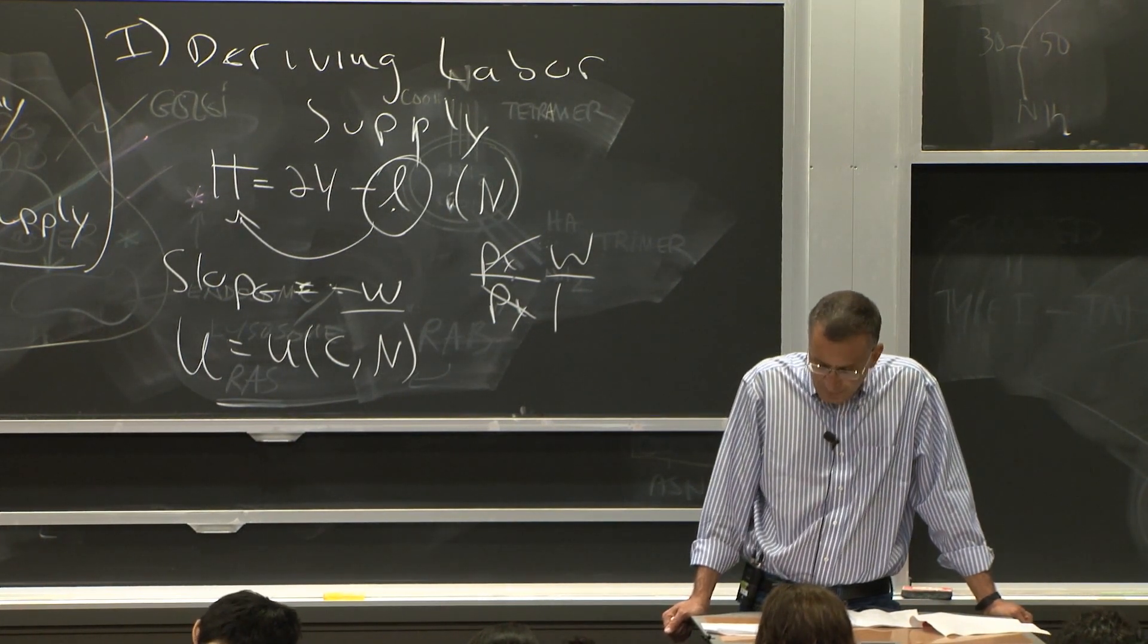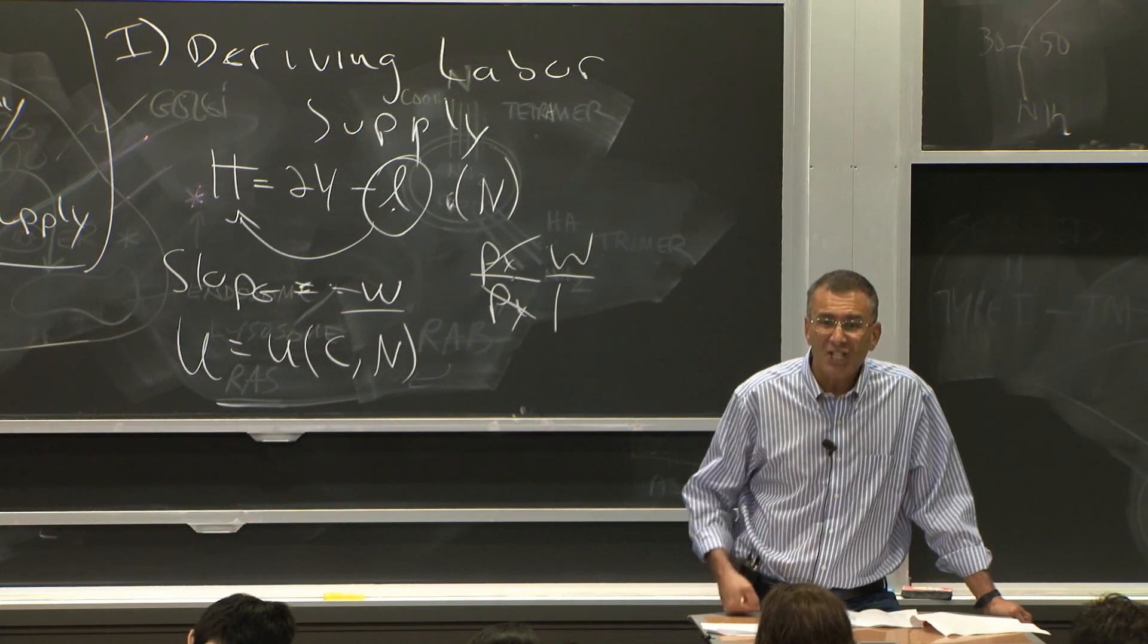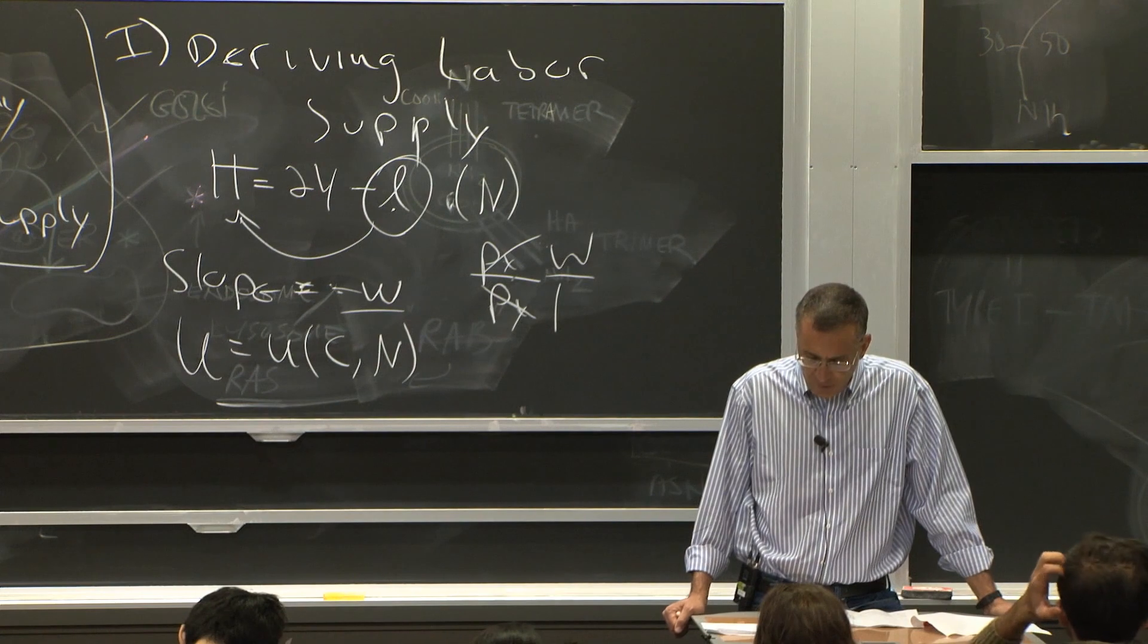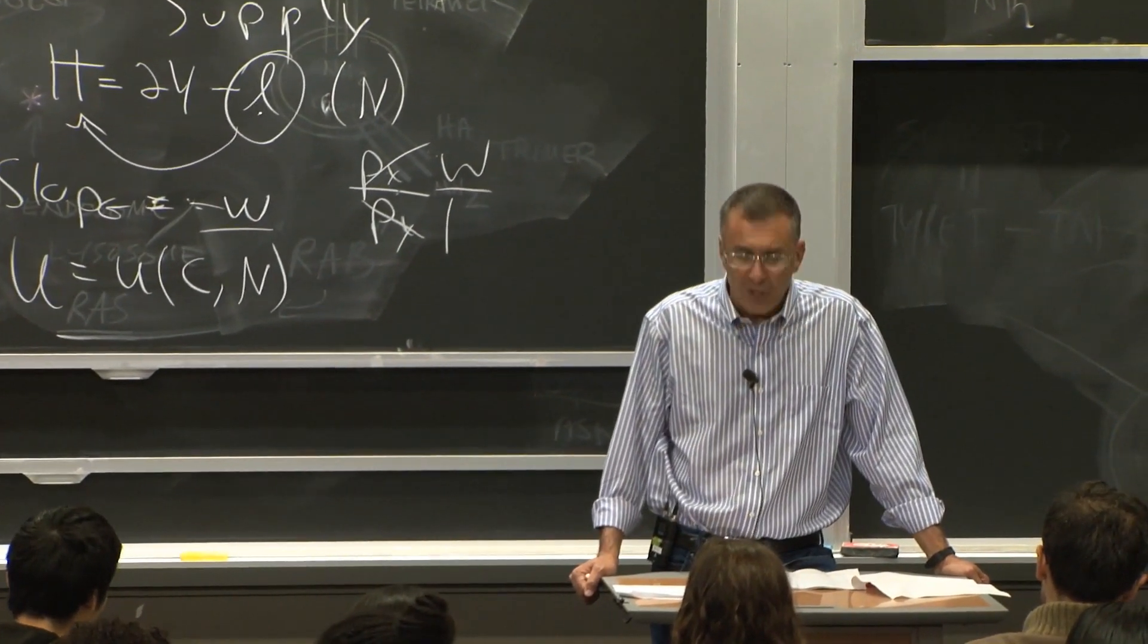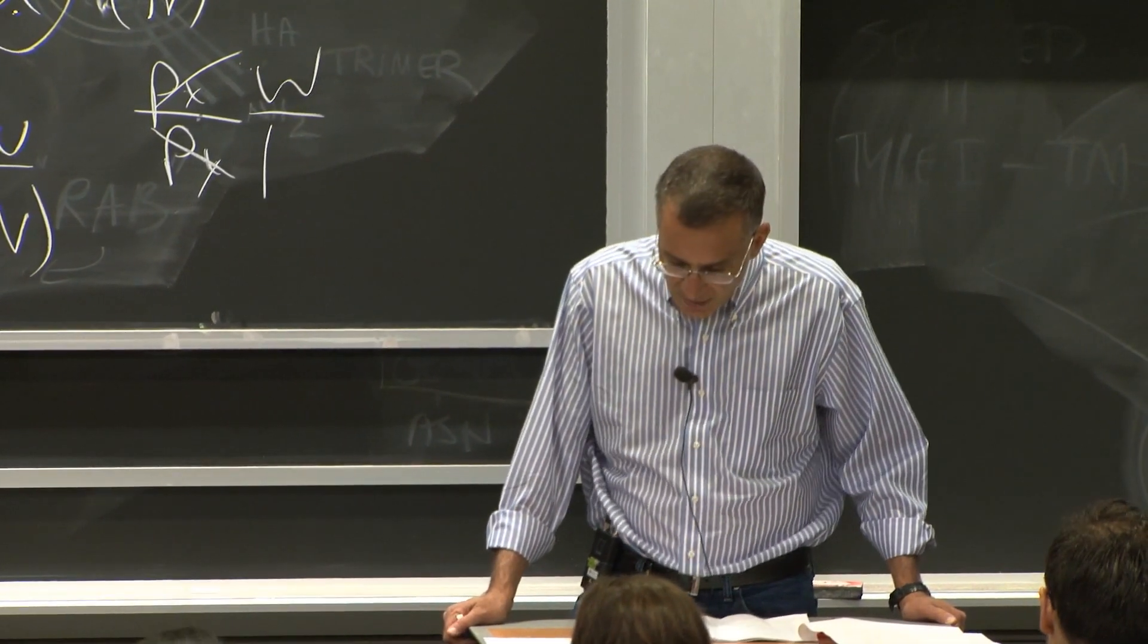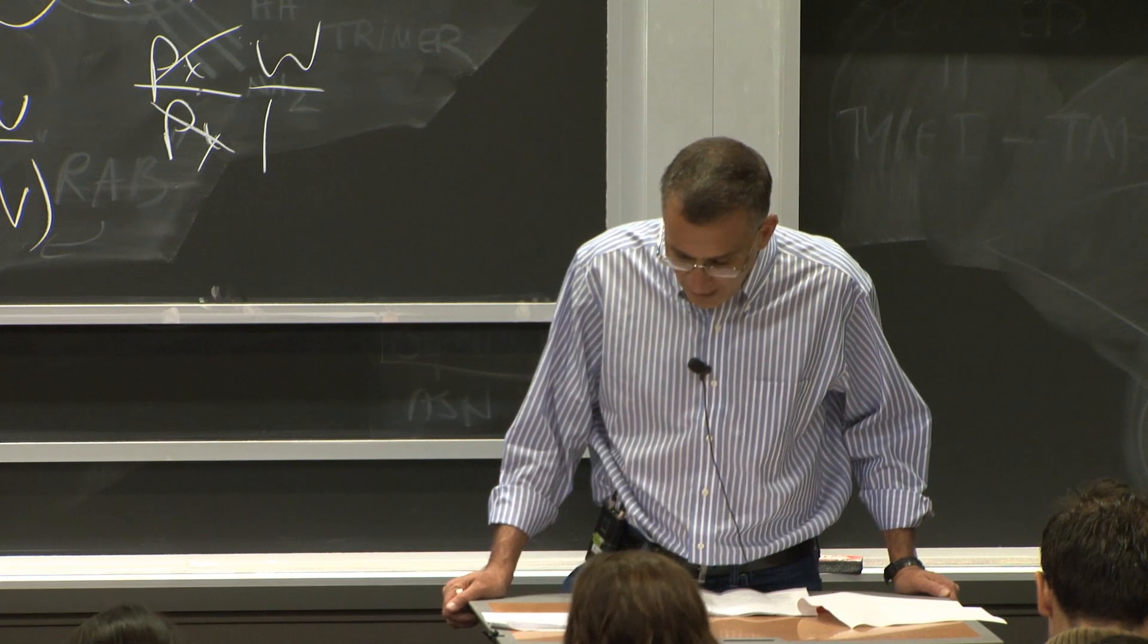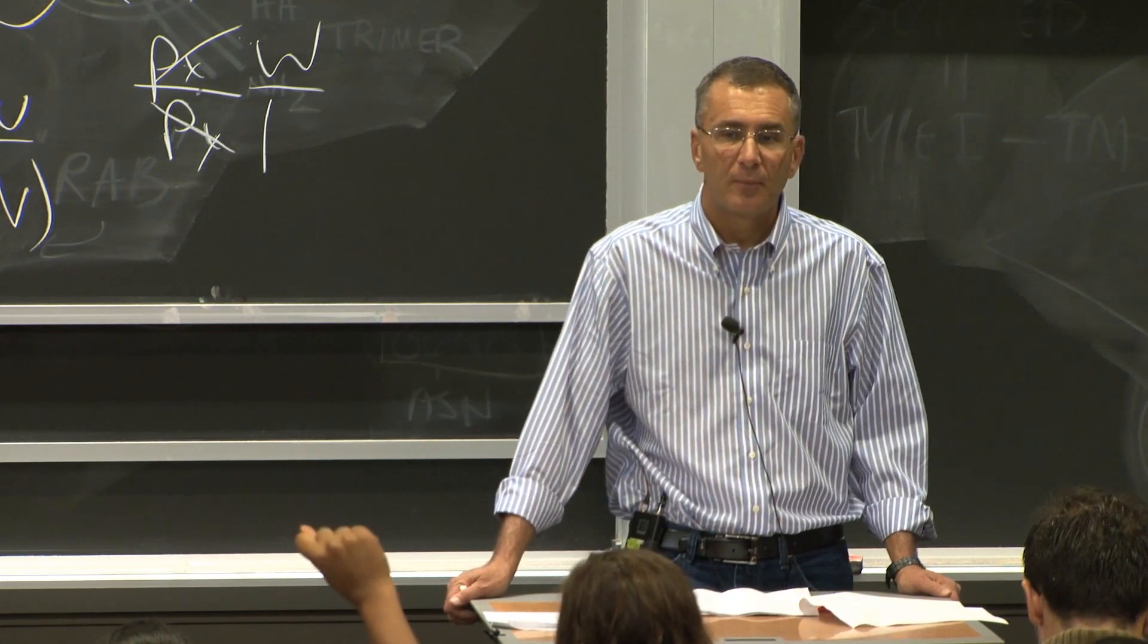But now let's break that down. Income substitution effects. The substitution effect is the price of leisure has gone up, which by definition has to lead you to take less leisure. That's definitional. Zero or non-positive. It can't lead you to increase. It typically leads you to decrease. So you will move from point N1 to point N2. So remember how we get that. We draw that imaginary budget constraint that intersects the original indifference curve. So the imaginary budget constraint is BC star. That intersects the original indifference curve at point B. So substitution effect is moving from point A to point B.